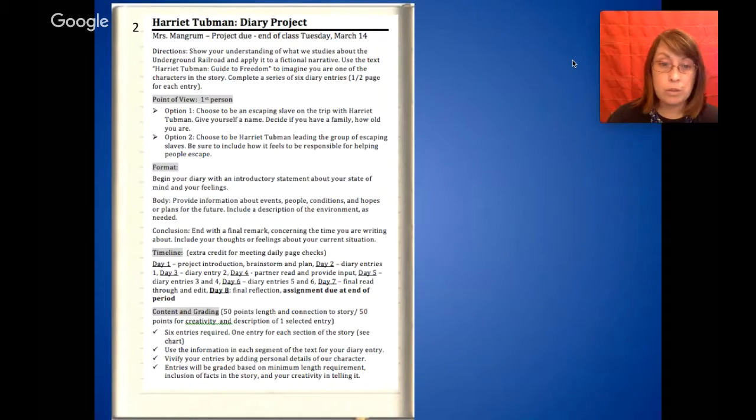Content and grading: 50 points for length and connection to story and 50 points for creativity and description of one selected entry. So I'll look at your overall project for how it connects and are you meeting the daily page requirements. And then I will look for creativity and description in one selected entry. I did have six entries total and it's based on chunking of the story or sections of the story. Use the information in each segment of the text for your diary entry. Vivify your entries by adding personal details of your character. Entries will be graded based on minimum length requirements, inclusion of facts in the story, and your creativity in telling it. So those are your overall instructions.